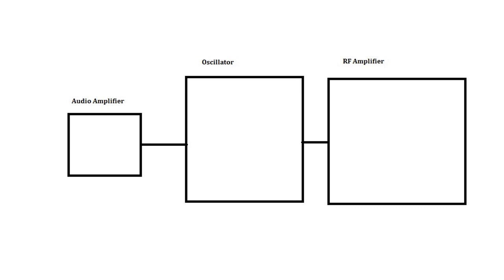Don over at Restore Old Radios recently did an AM transmitter. This is a block diagram of what he had - he had an audio amplifier that fed into his oscillator and then ended up with just the RF amplifier into the antenna.